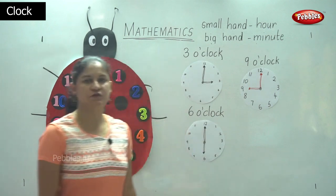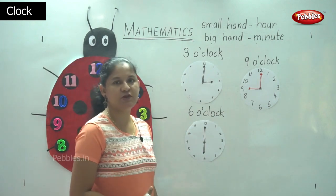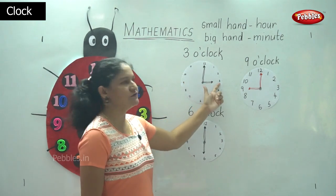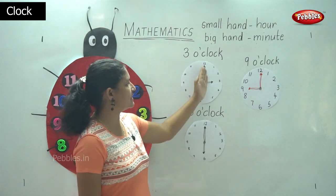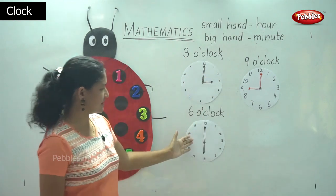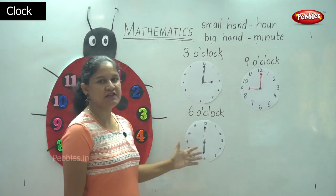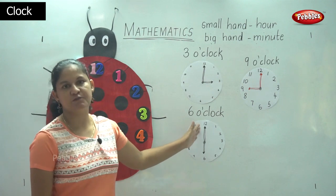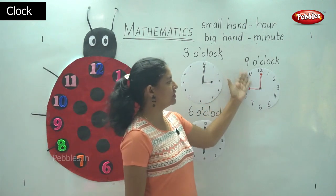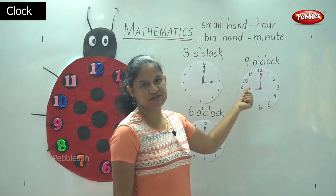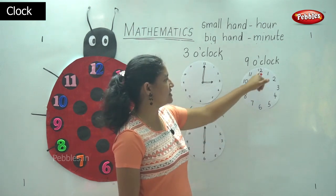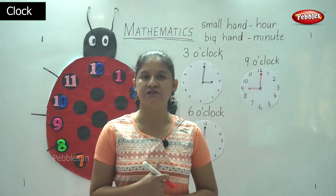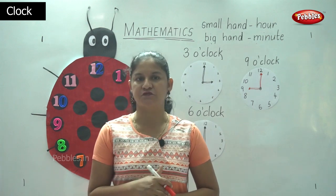So we read the time as 9 o'clock. I hope you have understood this concept of marking the timing. For 3 o'clock: the small hand points towards 3 and the big hand points towards 12. For 6 o'clock: the small hand points towards 6 and the big hand points to 12. For 9 o'clock: the small hand points towards 9 and the big hand points to 12. This is the way we learn to draw the hands of the clock.